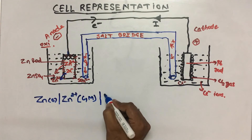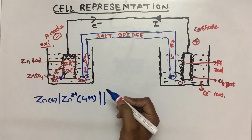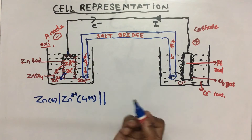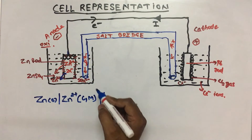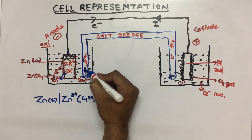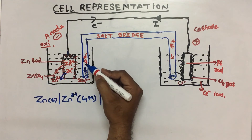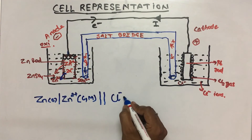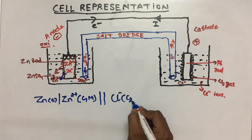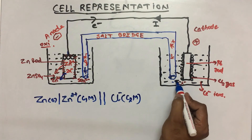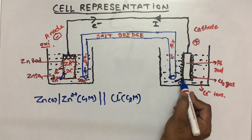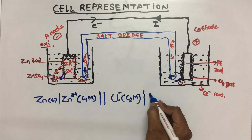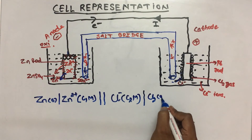Now you will make the symbol of the salt bridge. In the salt bridge there is KCl or KNO3, because there are positive ions on one side and negative ions on the other side, so they get neutralized in the solution. When you go to the next solution, you get Cl- ions at concentration C2 molar. Then, when you go to the cathode electrode, you get chlorine gas. If pressure is mentioned, you write the pressure — suppose P1 atmosphere.